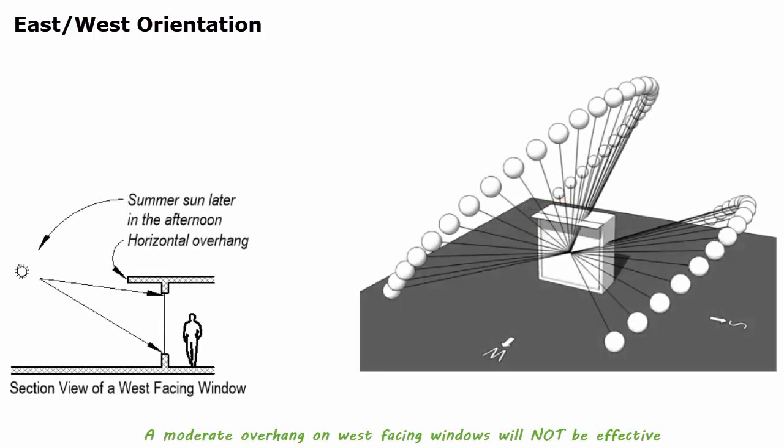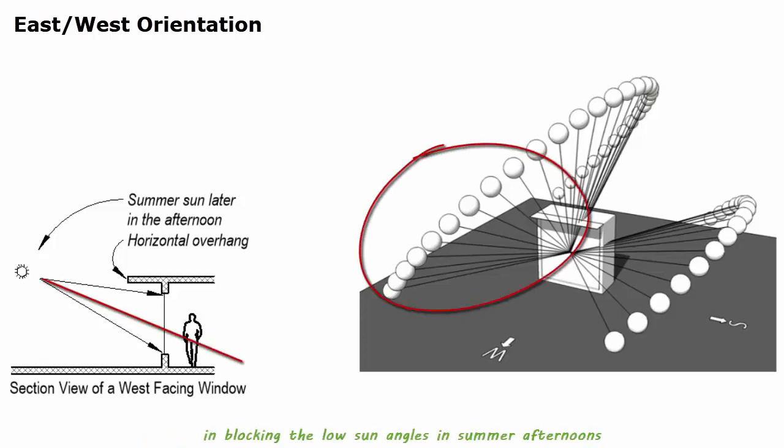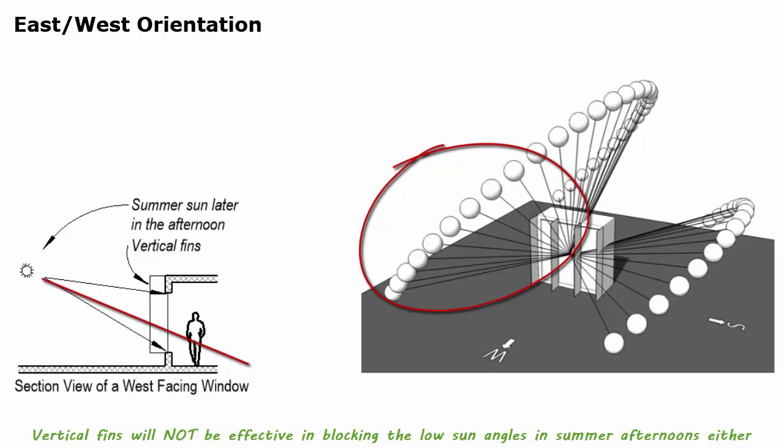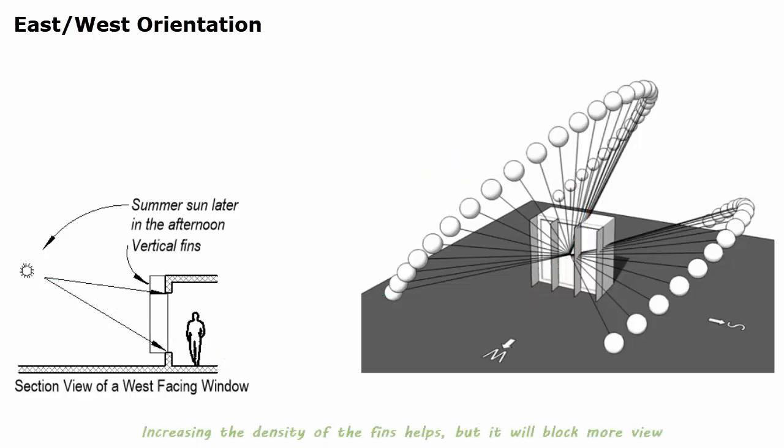A moderate overhang on west-facing windows will not be effective in blocking the low sun angles in summer afternoons. Vertical fins will not be effective either in blocking the low sun angles in summer afternoons. Increasing the density of the fins helps, but it will block more view.